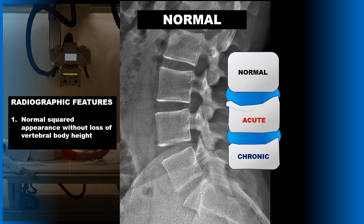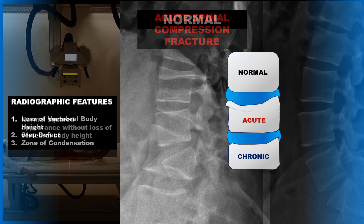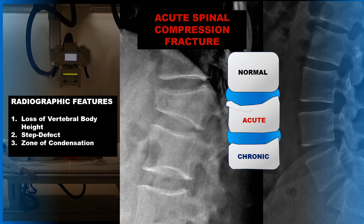The normal radiographic appearance of the vertebral body is squared, without loss of anterior vertebral body height. With an acute spinal compression fracture on radiographs, you're going to see a loss of anterior vertebral body height, a step defect anteriorly, and possibly a zone of condensation where the bone has been compressed.